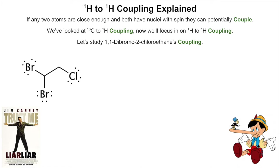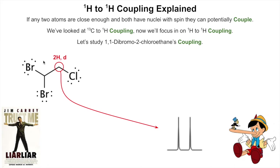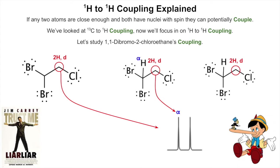Let's study this molecule first — this is an easy one: 1,1-dibromo-2-chloroethane. It's got two hydrogen groups; one is the two-hydrogen doublet because it has just one hydrogen neighbor. That two-hydrogen doublet has one hydrogen neighbor, which can be in the alpha spin state, giving you the more downfield part of the doublet, or it can be in the beta spin state, giving you the more upfield part.